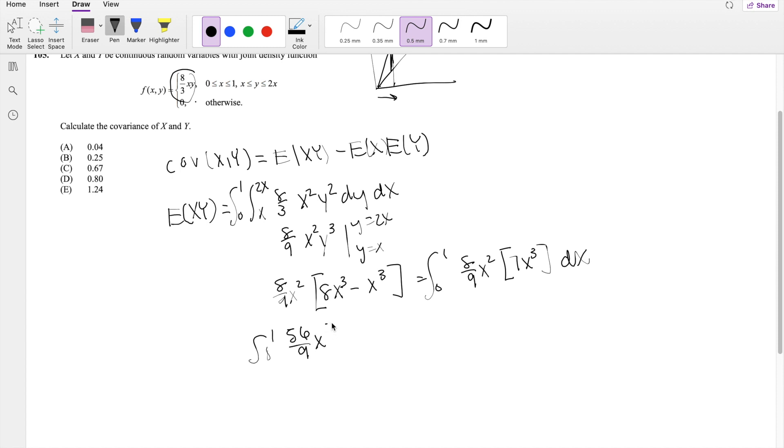So then this is equal to 56 over 9 x to the fifth dx. Integrating this in terms of dx, you get x to the sixth over 6, so 56 over 54, integrating from 0 to 1. The lower limit just gives you 0, so you're just going to get 56 over 54.